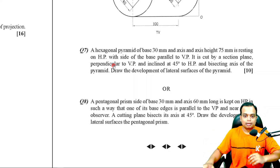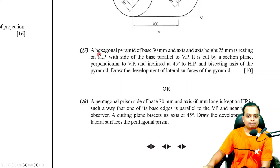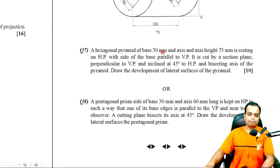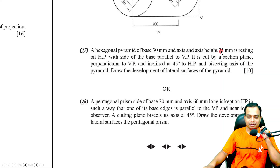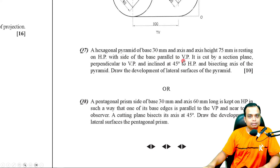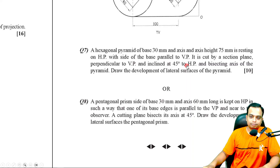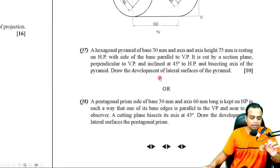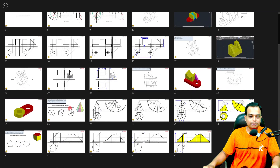Let me read the question. There is a hexagonal pyramid of base 30 mm and axis 75 mm, resting on HP with the side of the base parallel to VP. It is cut by a section plane perpendicular to the VP and inclined at 45 degrees to the HP, also bisecting the axis of the pyramid. Draw the development of the lateral surface of the pyramid.